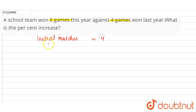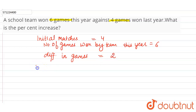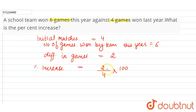The number of games won by the team this year is six. The difference, or increase, in the number of games won is two. To find the percentage increase, in the numerator we write the difference in the games, which is two, and divide by the initial matches, which are four, then multiply the fraction by 100.